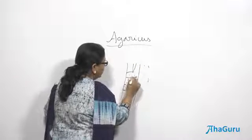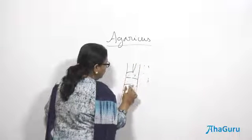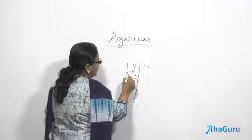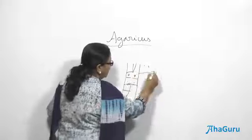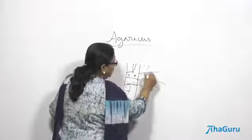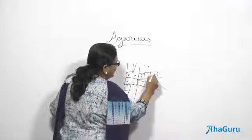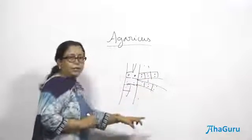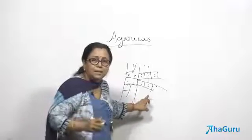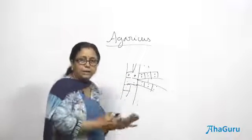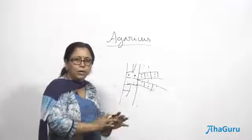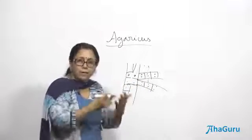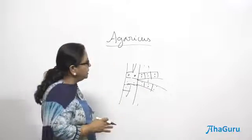The cross wall goes away and a secondary mycelium is formed. This secondary mycelium starts developing many more hyphae which are dikaryotic. So a dikaryotic mycelium is called secondary mycelium. Initially there is a primary mycelium which is monokaryotic; once plasmogamy happens between two hyphae it results in a secondary mycelium which is dikaryotic.